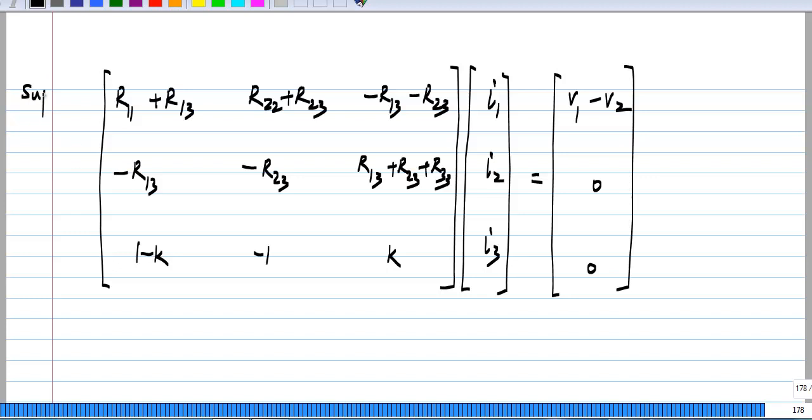So the first row is for the super mesh, the second row is for mesh number 3, the third row is the constraint coming from the current controlled current source. And I will continue to call this R or resistance matrix.